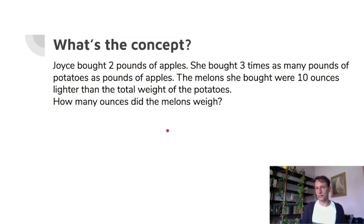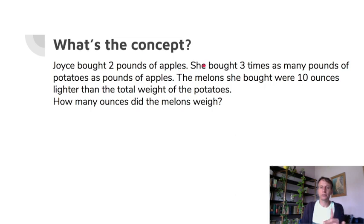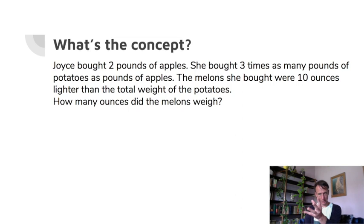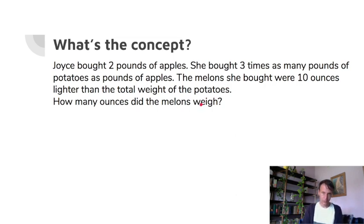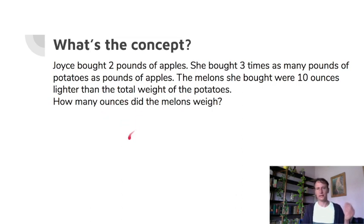This last one requires careful reading — more steps and more thinking. Joyce bought two pounds of apples. She bought three times as many pounds of potatoes as apples. The melons she bought were 10 ounces lighter than the total weight of the potatoes. We need the weight of the melons in ounces — not pounds, not mixed units, but ounces.